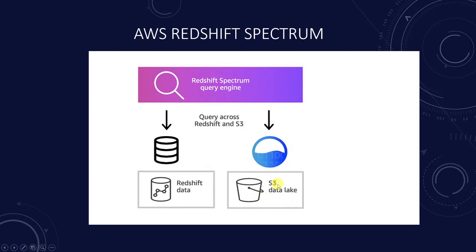We can efficiently query and retrieve structured and semi-structured data from files stored in Amazon S3 without having to load the data into Amazon Redshift tables. Redshift Spectrum queries employ parallelism, so the queries run fast against large data sets.